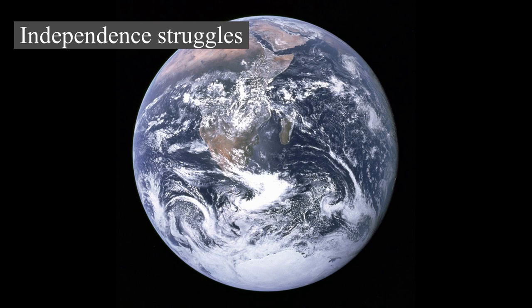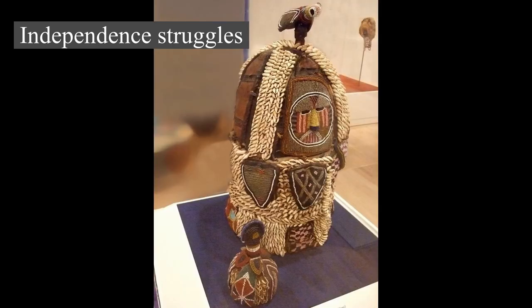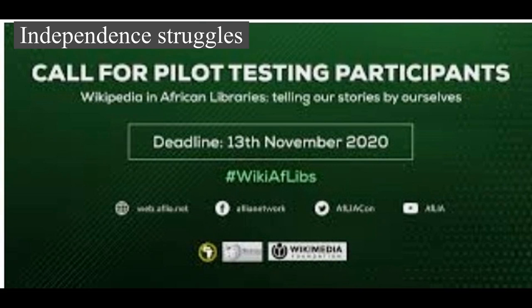Portugal's overseas presence in sub-Saharan Africa — most notably in Angola, Cape Verde, Mozambique, Guinea-Bissau, and São Tomé and Príncipe — lasted from the 16th century to 1975, after the Estado Novo regime was overthrown in a military coup in Lisbon. Rhodesia unilaterally declared independence from the United Kingdom in 1965 under the white minority government of Ian Smith, but was not internationally recognized as an independent state as Zimbabwe until 1980, when black nationalists gained power after a bitter guerrilla war.